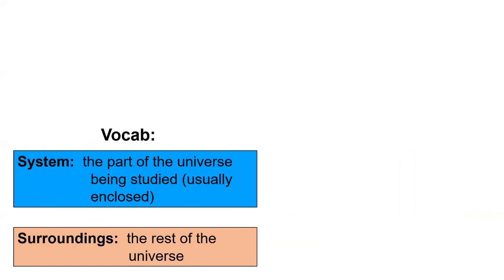It can be sometimes difficult to determine what the system is, but it's usually enclosed so that no molecules can leave or enter. Only heat can leave or enter. The surroundings are everything which is not the system.